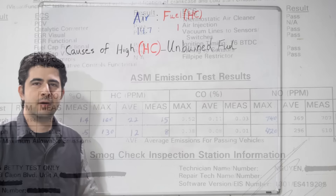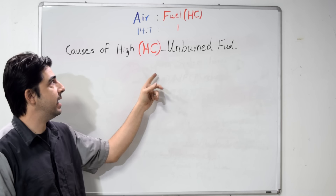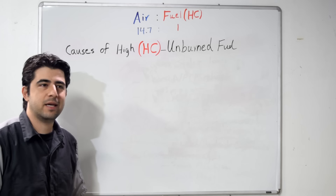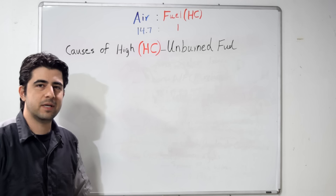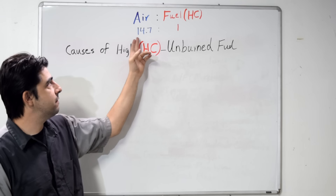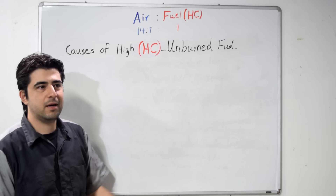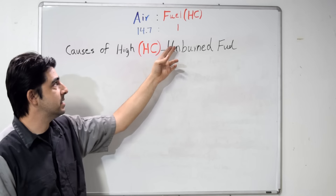First we're going to try and see what can cause you to have high HC, but before we do that, I need to clarify something — your air-fuel mixture — because in this video I'm going to say a rich condition can do this, or a lean condition can cause different levels of a particular emissions gas. Basically, in your car you're supposed to have exactly 14.7 parts of air to one part of fuel.